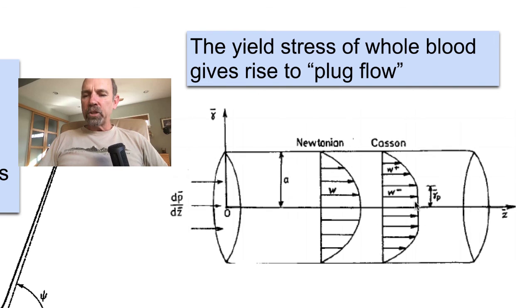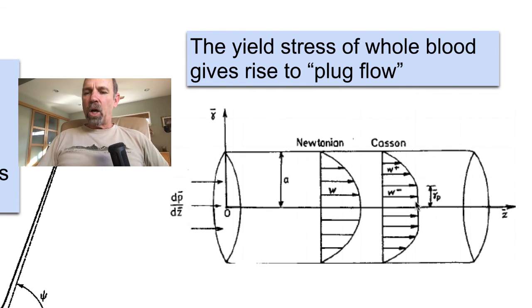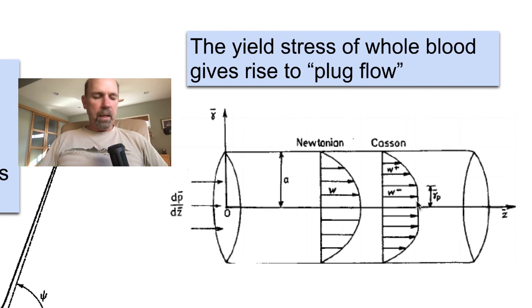Now, the yield stress of whole blood is low, only about one to six millipascals, which means the radius of the plug flow zone is typically low. But this diameter is also dependent on the vessel radius, and in a small vessel with a diameter of about 100 microns, the diameter of the plug flow zone may be 20 to 30 microns. Plug flow is thought to increase the efficiency of red blood cell transport in the circulation.